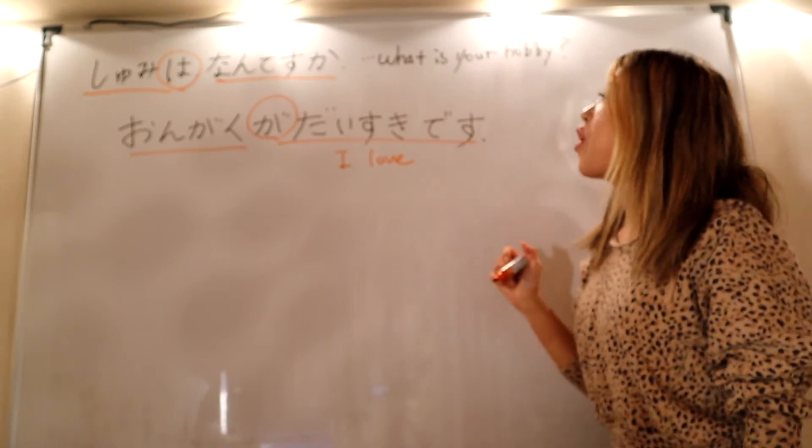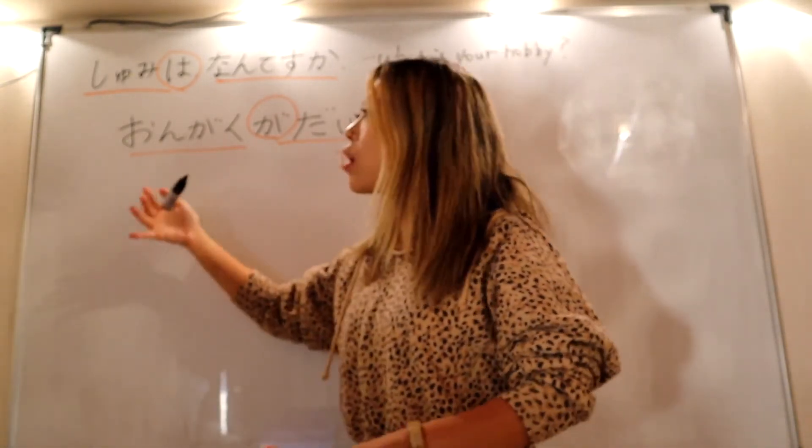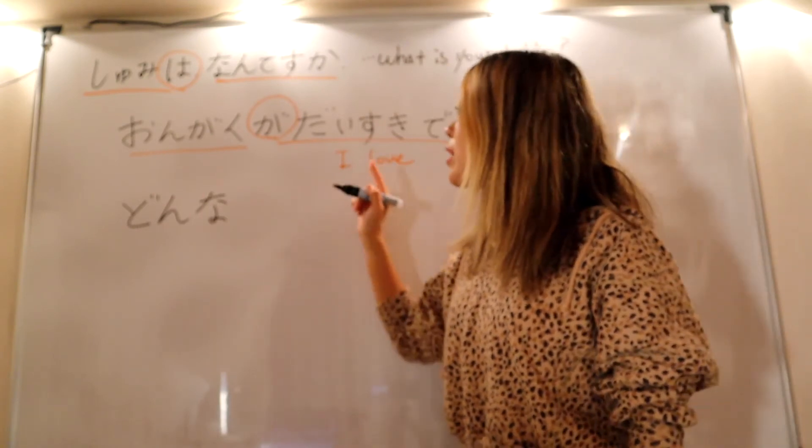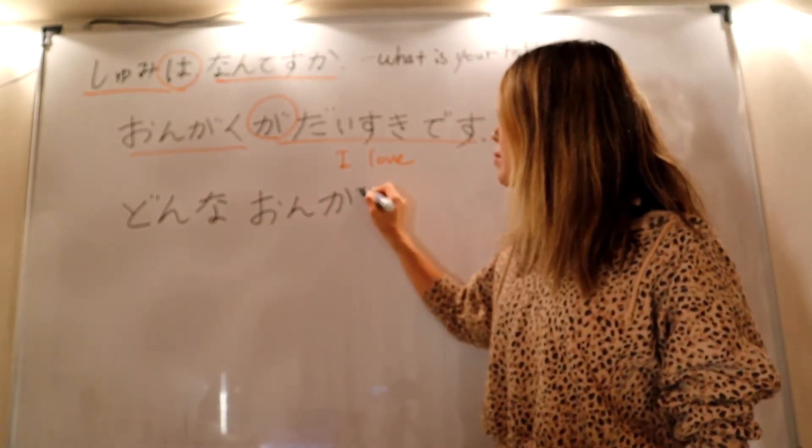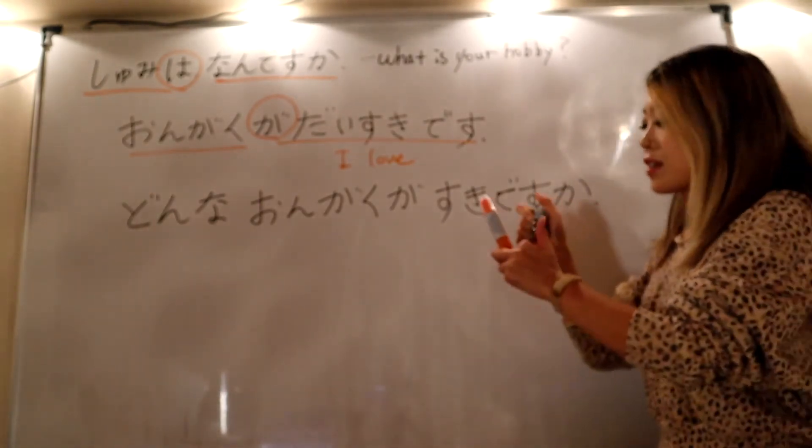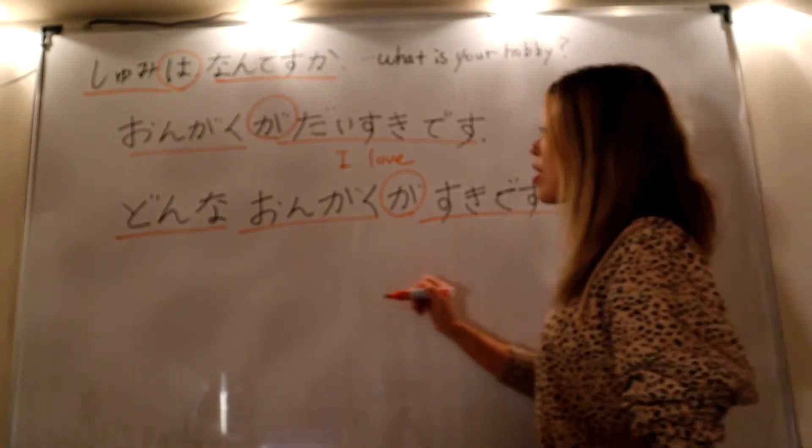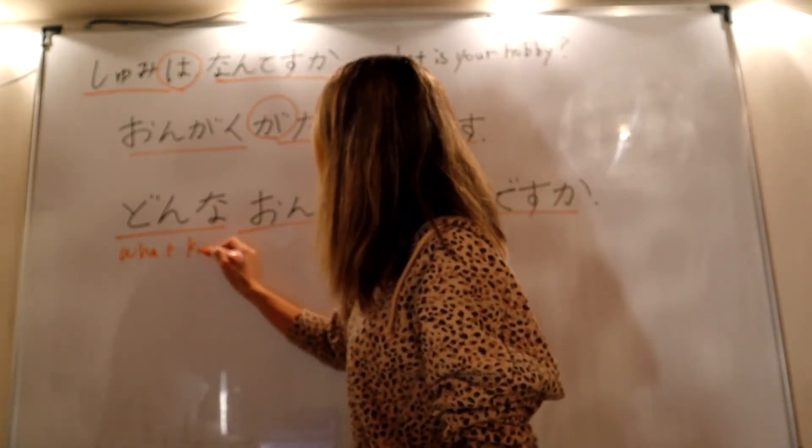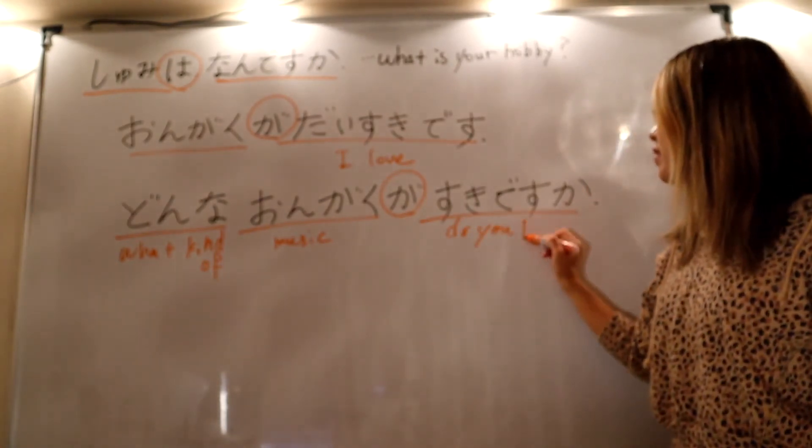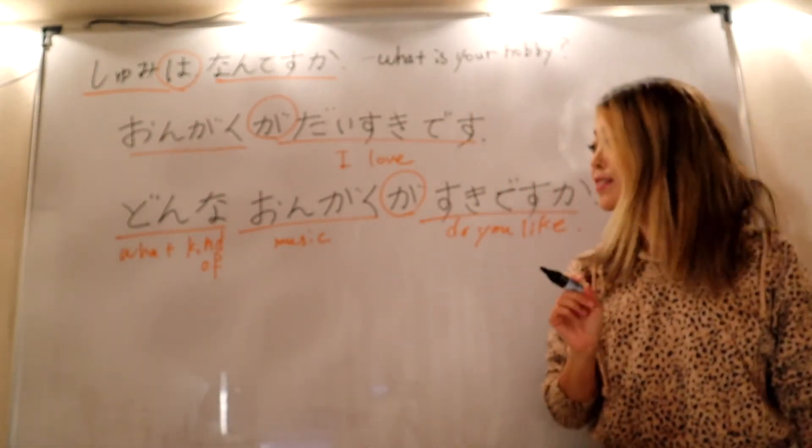Ongaku ga daisuki desu. Or if you want to speak more detail. What kind of music do you like? What kind of music do you like? Donna. Donna is what kind of. So let's memorize this. Donna is what kind of. Donna ongaku ga... do you like? What kind of music do you like?